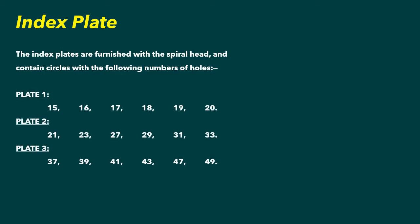The index plates are furnished with the spiral head and contain circles with different numbers of holes. We have these three plates which we are using in our lab: plate 1, plate 2, and plate 3. Each plate has a different range. Plate 1 has 15, 16, 17, 18, 19, 20. Plate 2 has 21, 23, 27, 29, 31, 33. Plate 3 has 37, 39, 41, 43, 47, 49.